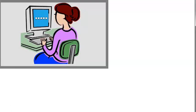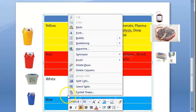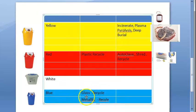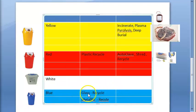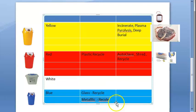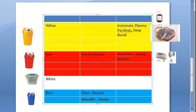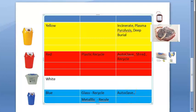Blue bin gets glass and metal. Glass comes from medicine vials and ampoules — those bottles that contain medicine. Metal comes from body implants and similar items. For the blue bin, they disinfect by autoclaving or microwaving, then directly send for recycling. Importantly, there is no shredding done for blue bin items — just autoclave and then recycle.